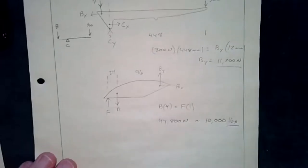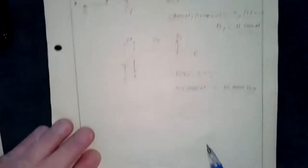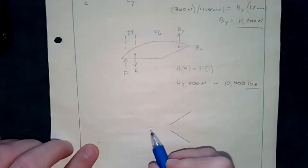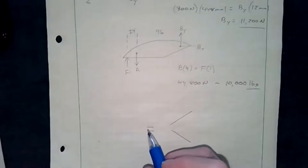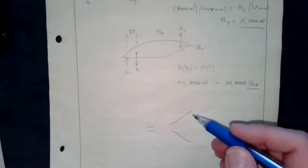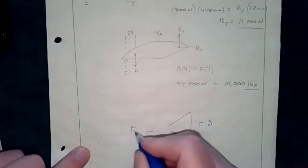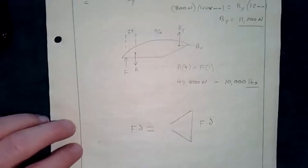If you've ever used bolt cutters, you know that to impart that force the handles must open quite wide, but the blades open only a very small amount — maybe a centimeter of travel at the blades for a huge travel at the handles. This is force times distance: both sides must be equal to one another because work must be conserved.